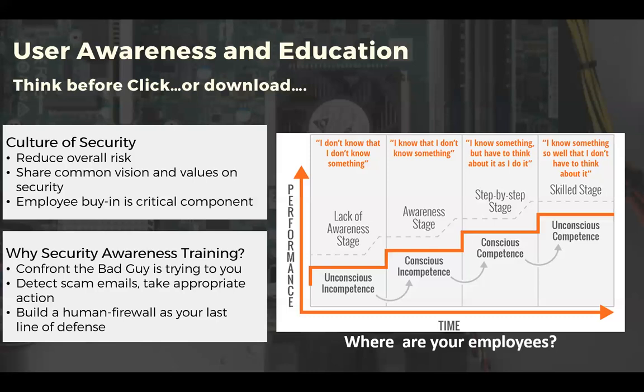When we look at the educational timeline, I have to ask where you think your employees are. Are they at that lack of awareness — the unconscious incompetence stage where they don't know that they don't know something? We do see that a lot. A phishing email — what is that? They may not even know. Then they become aware — conscious that there's a threat out there. I'm aware of that threat, but maybe they can't recognize it at that point. That's the awareness stage where I know that I don't know something. Then we see building confidence — I know something, but I have to think about it as I do it. A lot of clients are somewhere between the awareness stage and the step-by-step stage, where employees still trust anything they see online or any email they get.